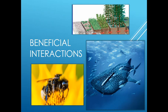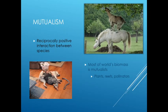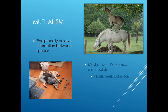Hello everybody. Let's get started — we're going to be talking about beneficial interactions, so how some species derive benefit from other species. The first thing that comes to mind is mutualism. Mutualism is this idea where there's a reciprocally positive interaction between species. We're not talking about cooperation between conspecifics — individuals of the same species — but different species where both of them derive a benefit.